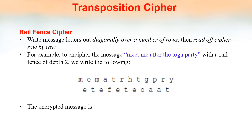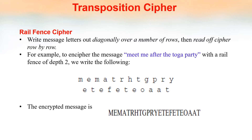Consider this example. The plaintext here is 'meet me after the toga party.' It is written diagonally with depth two: M, E, E, T — meet; M, E — me; A, F, T, E, R — after the toga party. So then it is read off row by row, and we will get the encrypted message.